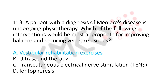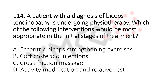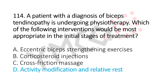Now let's move to question number 114. A patient with a diagnosis of biceps tendinopathy is undergoing physiotherapy. Which of the following interventions would be the most appropriate in the initial stages of treatment? Option A, eccentric biceps strengthening exercises. Option B, corticosteroid injections. Option C, cross friction massages. Option D, activity modification and relative rest. And the answer is Option D, activity modification and relative rest.